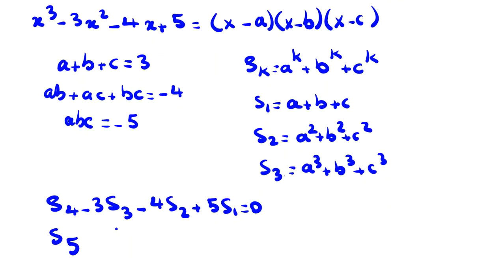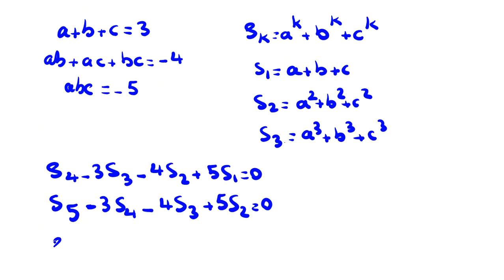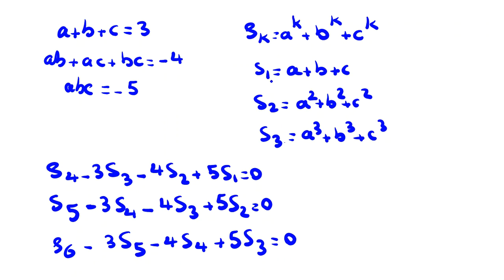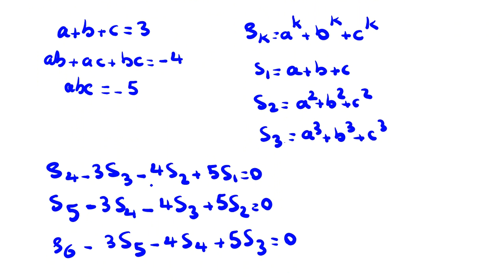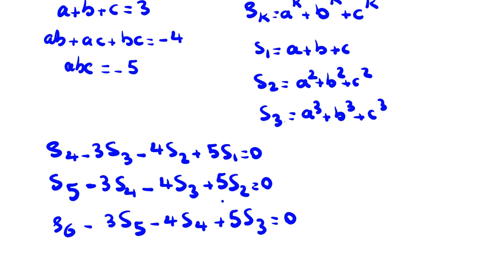In this problem we need S up to S_6. The recurrences are: S_4 − 3S_3 − 4S_2 + 5S_1 = 0; S_5 − 3S_4 − 4S_3 + 5S_2 = 0; S_6 − 3S_5 − 4S_4 + 5S_3 = 0. So once we find S_1 through S_3, we can compute S_4, S_5, S_6 and solve the problem.